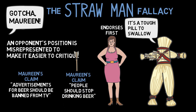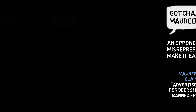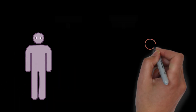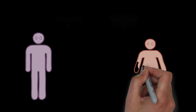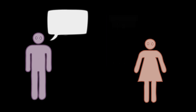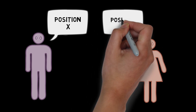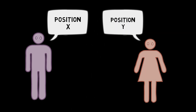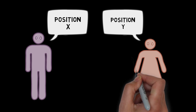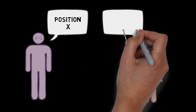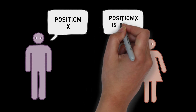Since this claim is much easier to refute than her original claim, I have committed the strawman fallacy. The general structure of strawman fallacies goes like this: First, person 1 advances position X. Second, person 2 presents a distorted version of position X — let's call this position Y. Third, person 2 attacks position Y. And fourth, person 2 concludes that position X is false.